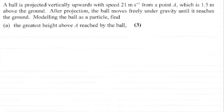Hi there. Now in this question what we've got is a ball is projected vertically upwards with a speed of 21 meters per second from a point A, which is 1.5 meters above the ground. And after projection the ball moves freely under gravity until it reaches the ground.